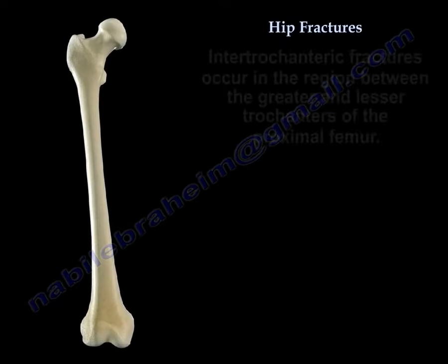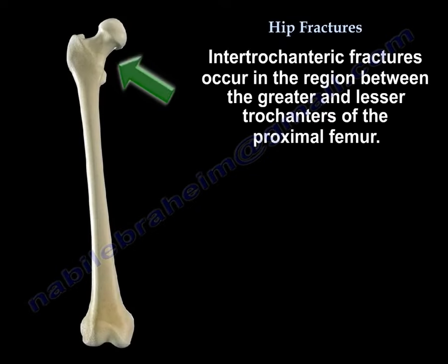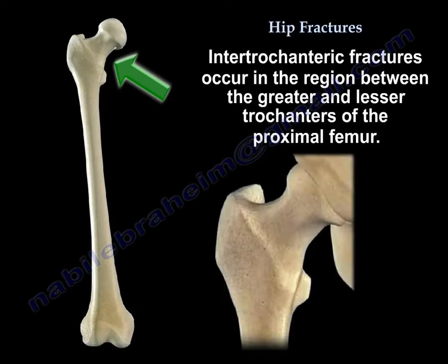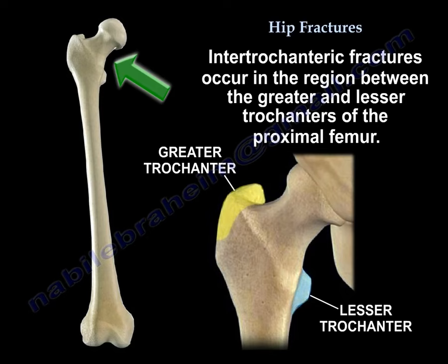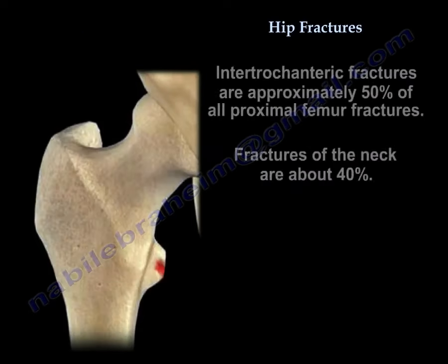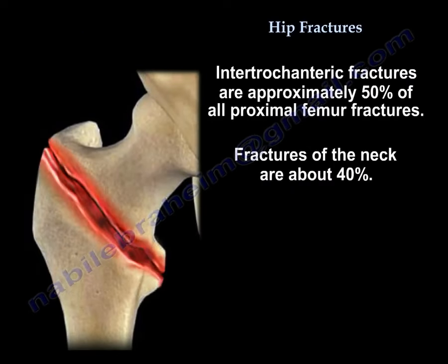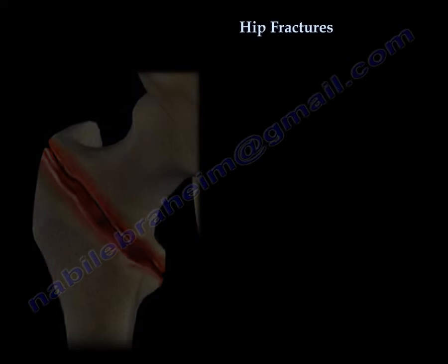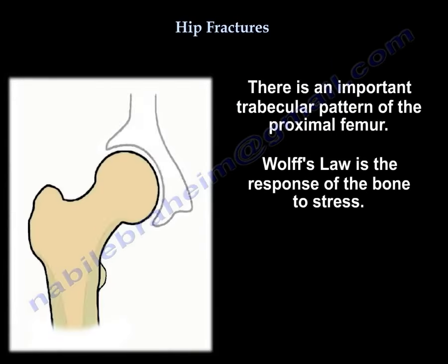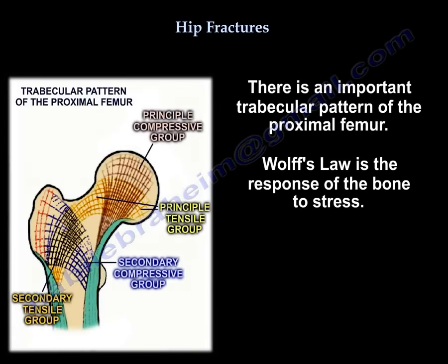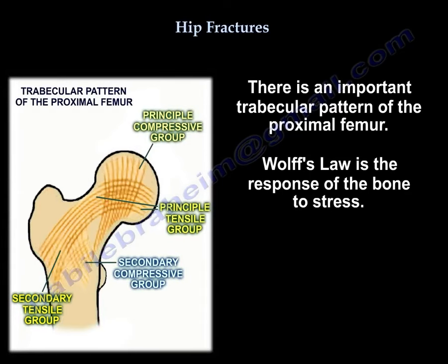Intertrochanteric hip fractures occur in the region between the greater and the lesser trochanters of the proximal femur. They represent approximately 50% of all proximal femur fractures, while femoral neck fractures account for about 40%. There are important trabecular patterns at the proximal femur that occur according to Wolff's law, which describes bone remodeling in response to stress.